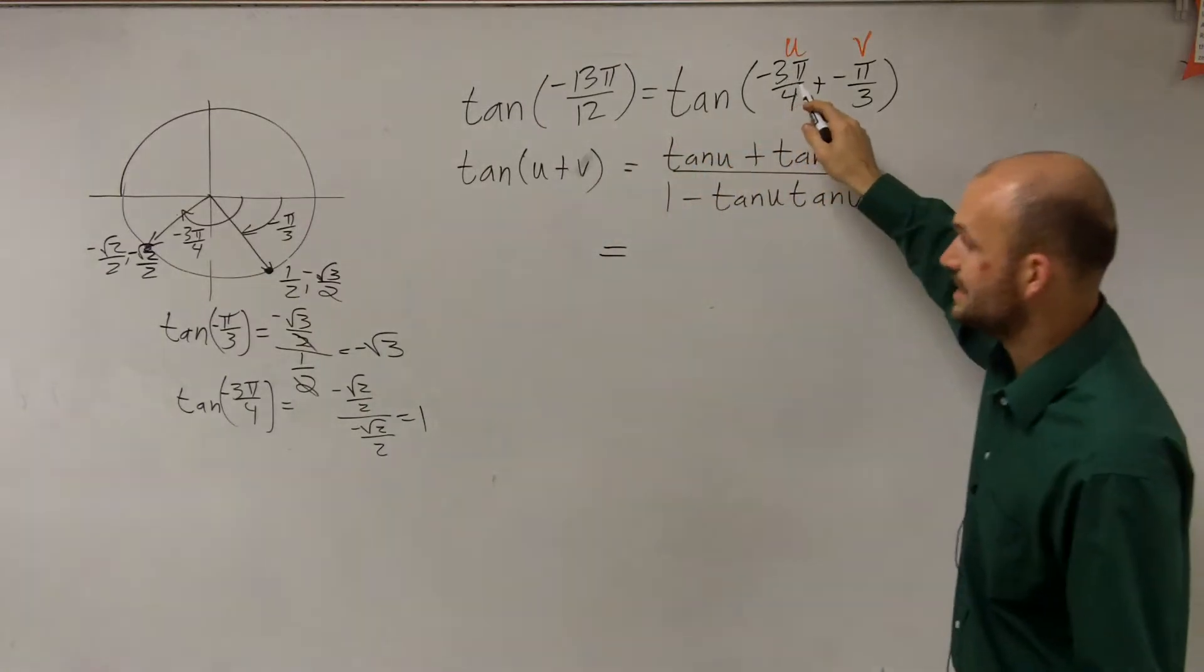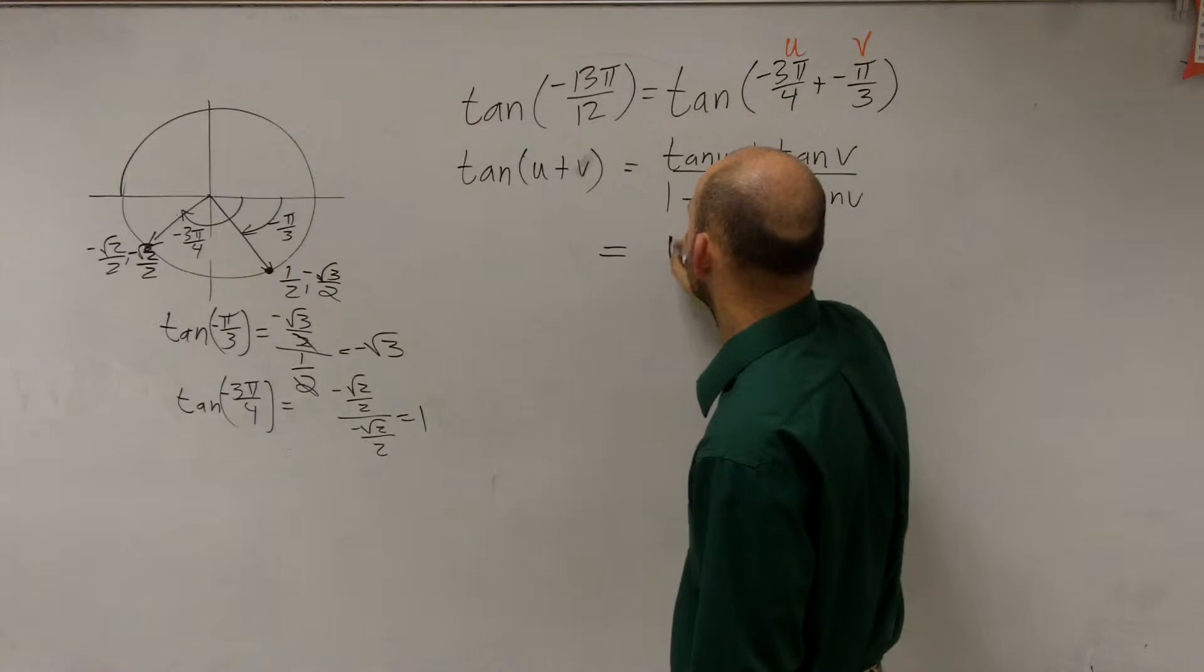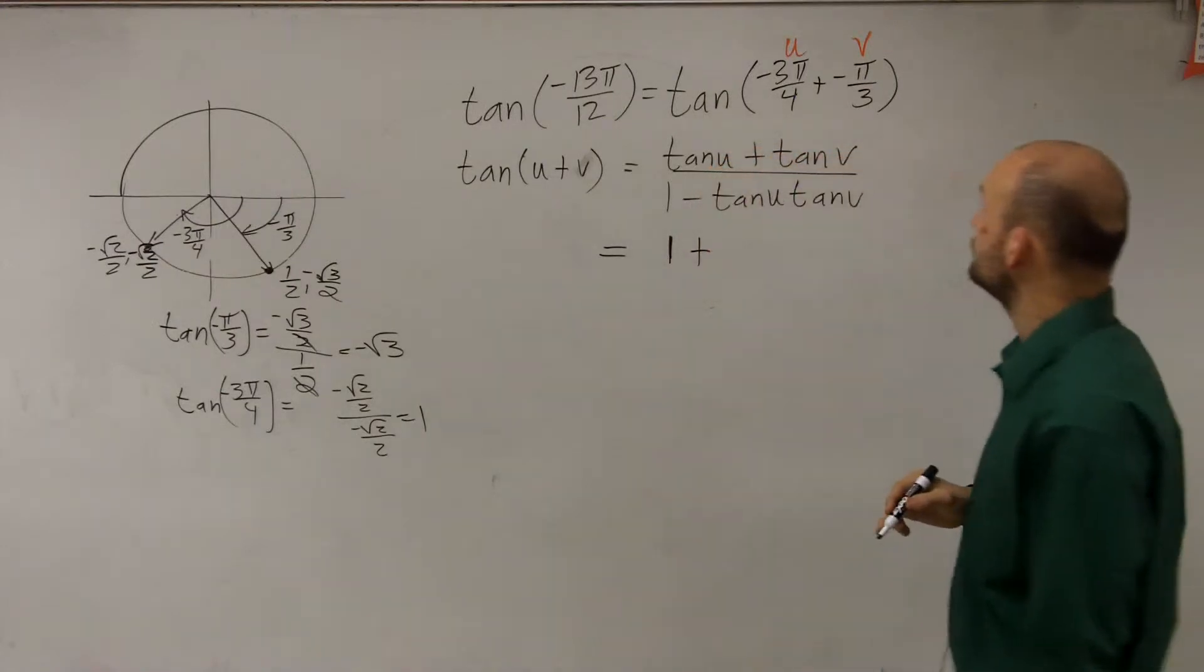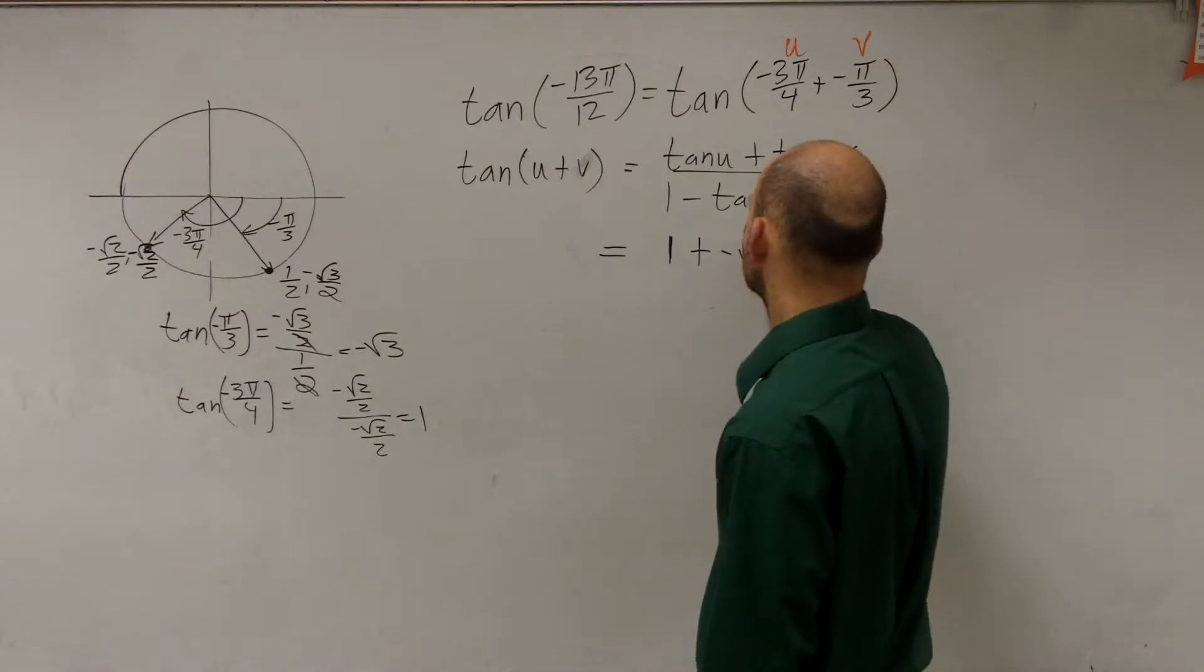I have tangent of u, which is the tangent of negative 3π over 4, which we said was 1, plus the tangent of v, which is negative π over 3, which is negative square root of 3,